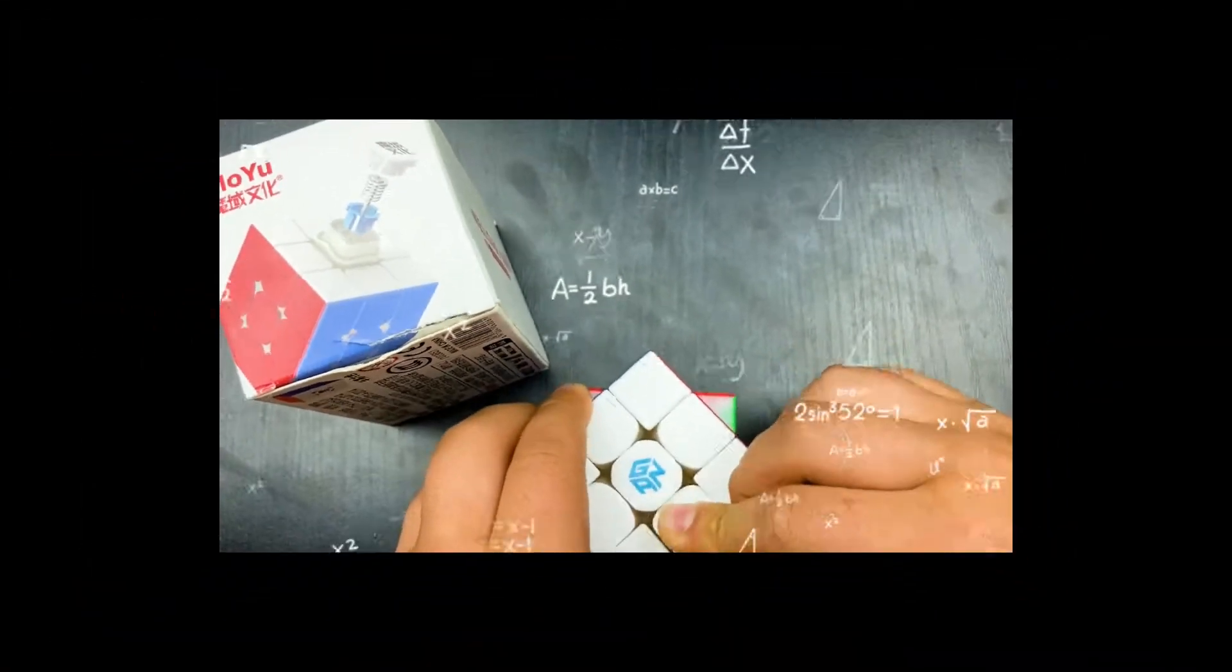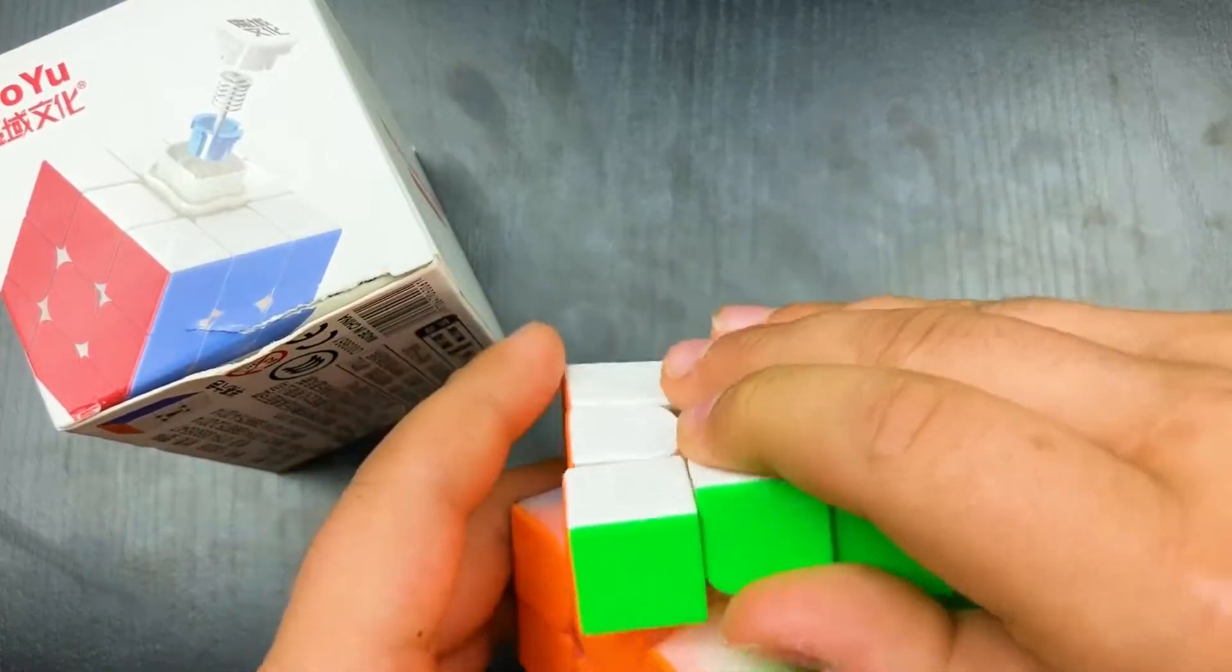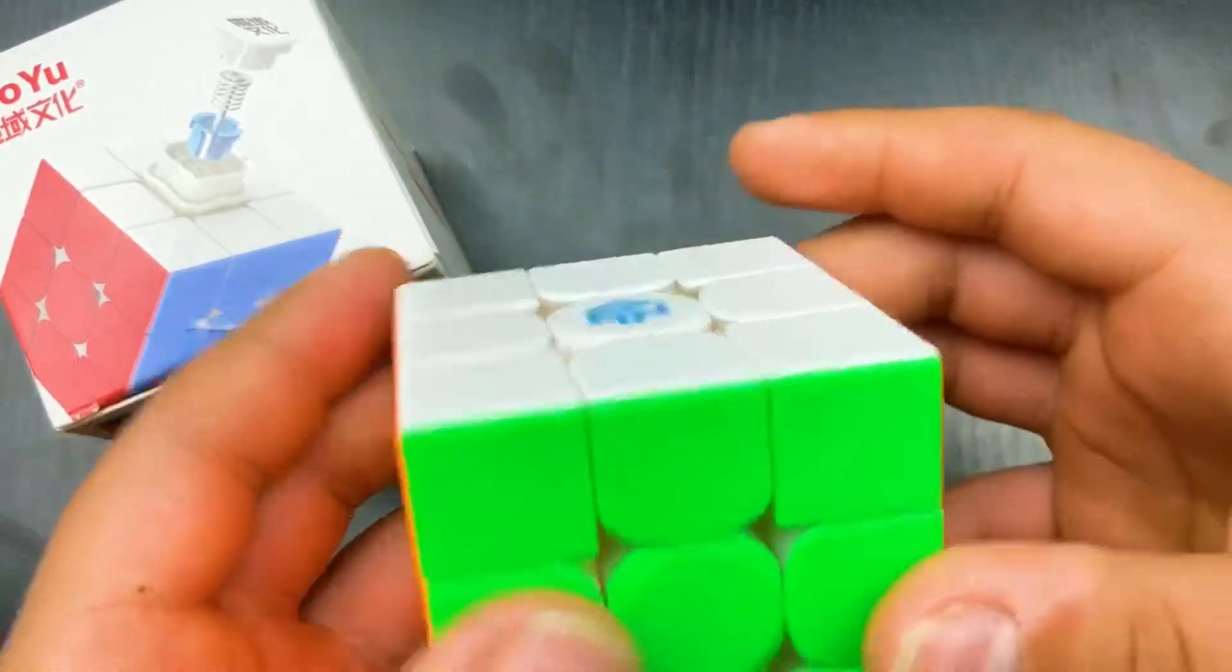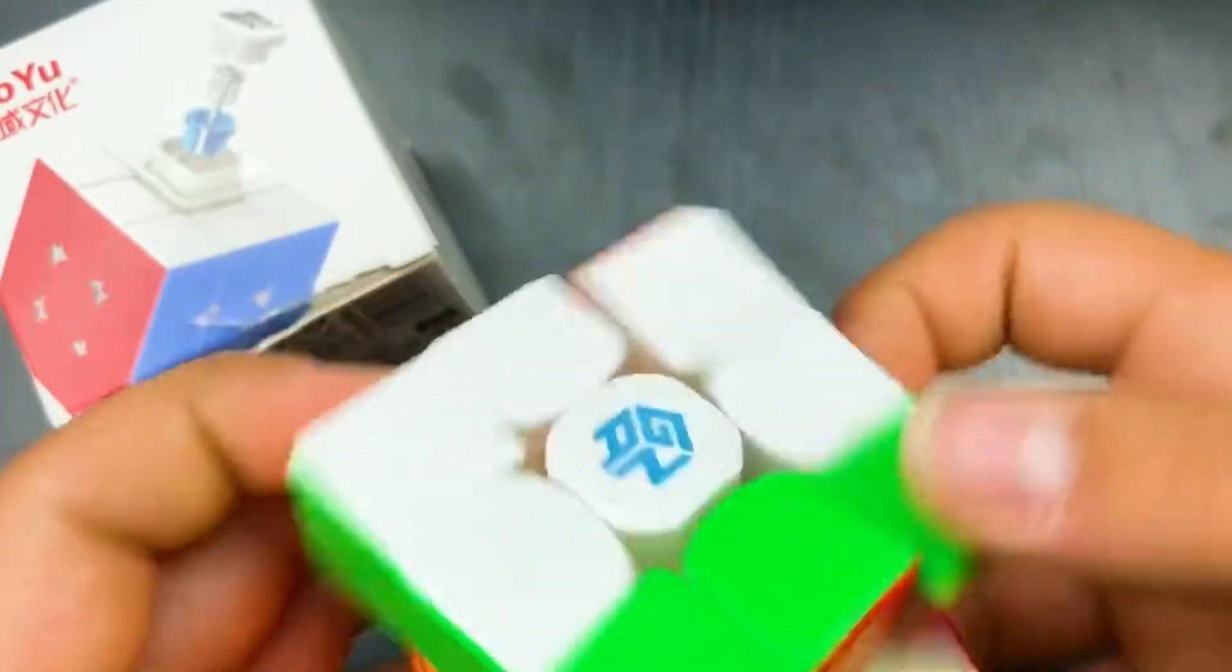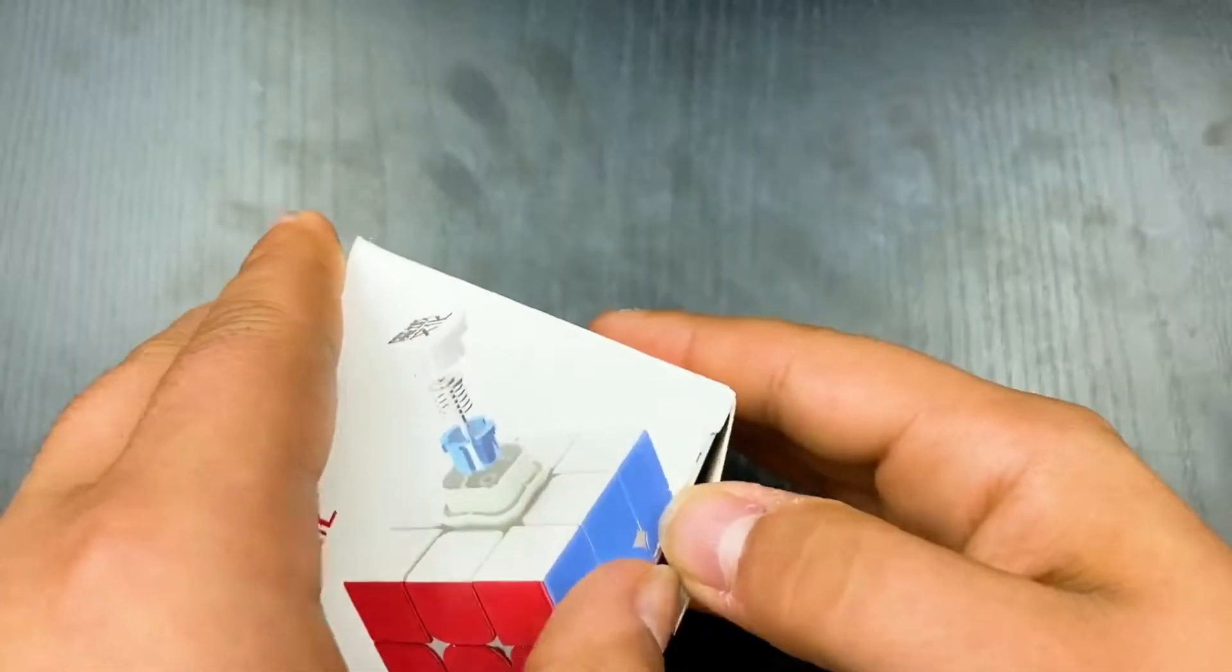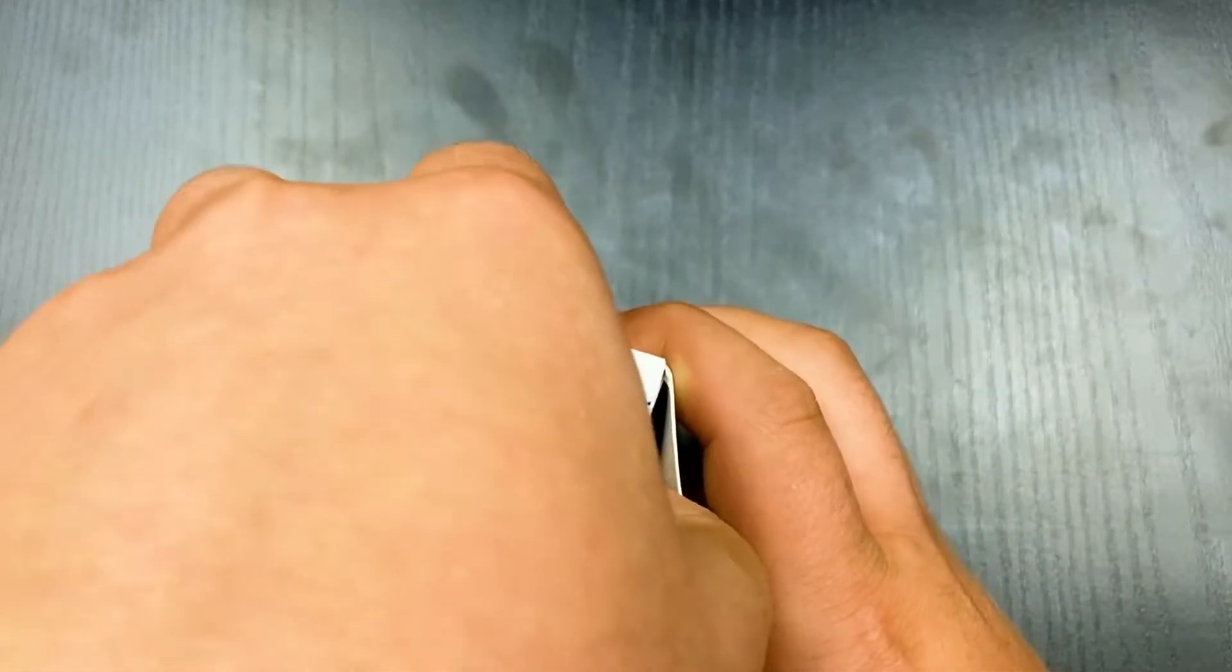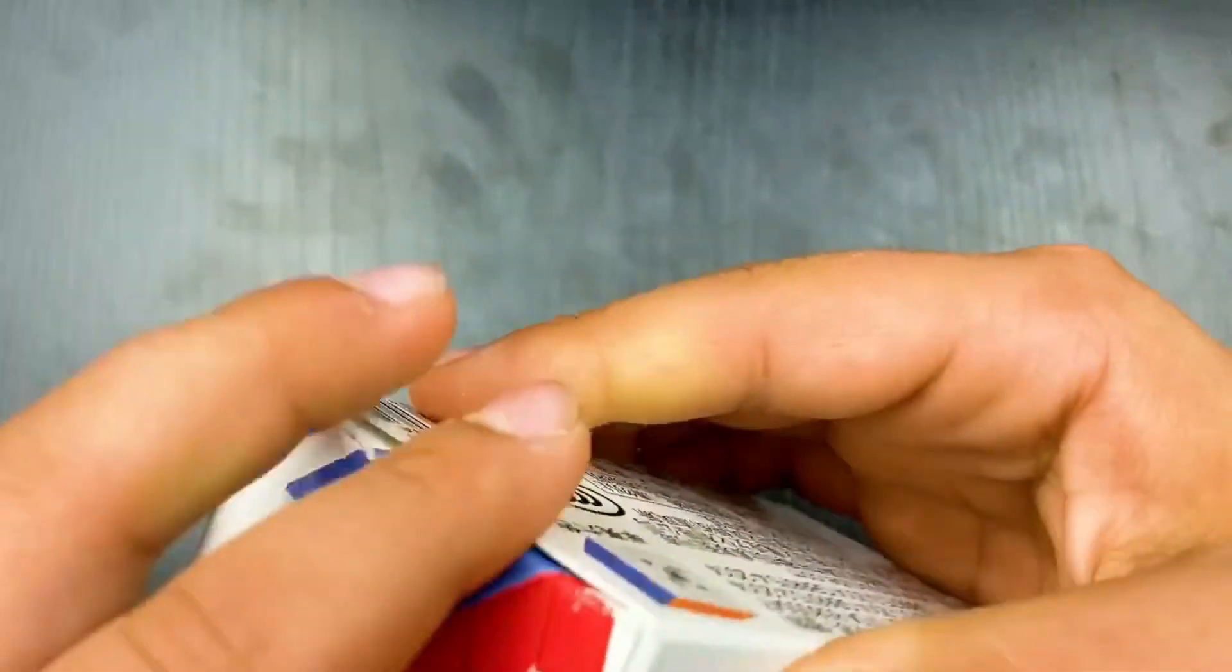But yeah, that name is just ridiculously long. As you guys may know, cubing names have been getting really ridiculous lately, like with the RS3M 2020 Plus and other things that are just really long names but it's not really the point of this video so let's get into the cube by ripping the box here.